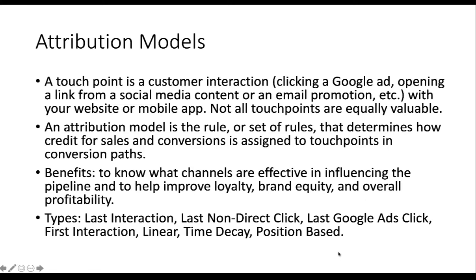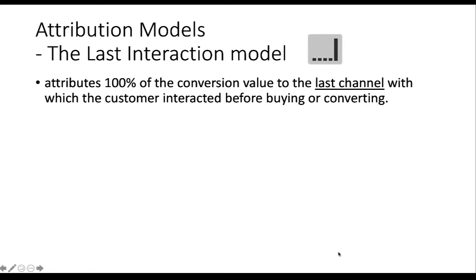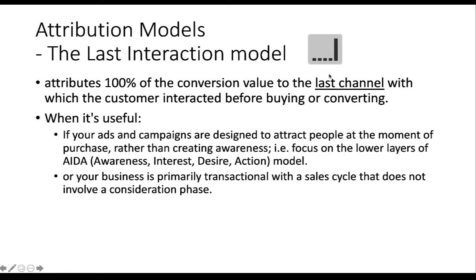There are different types of attribution models. The last interaction model is one of the most popular. It attributes 100% of the conversion value to the last channel the customer interacted with before buying or converting. As the picture from Google shows, if you have five interactions, the last one receives all the credit.